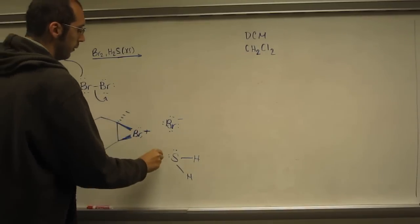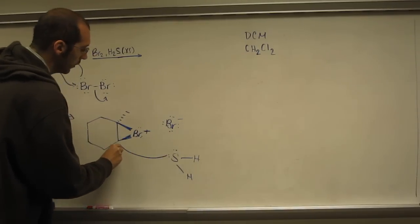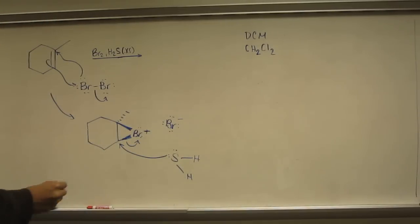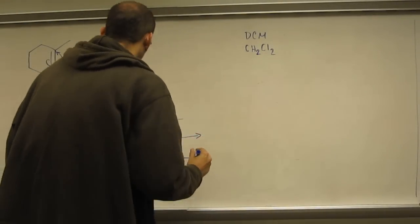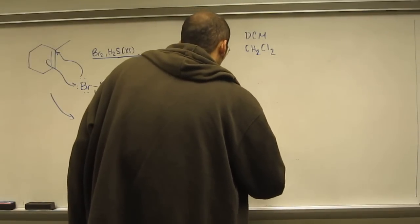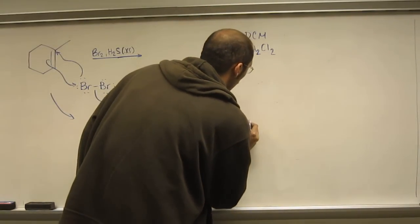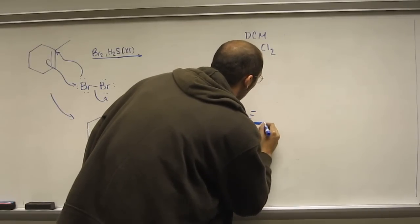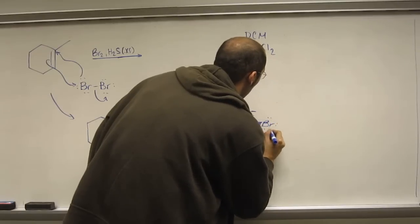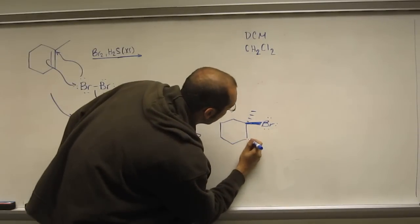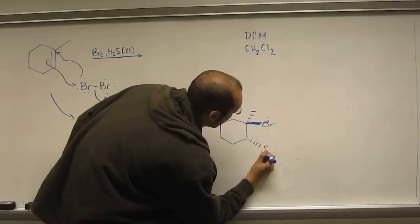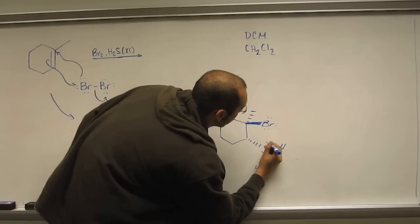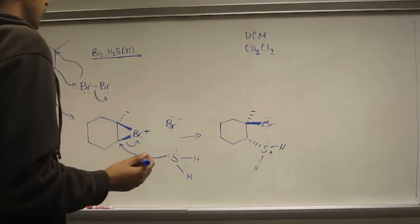And of course, you're going to make the enantiomer of that bromonium ion too. So we're going to get this reaction here. So you've got the bromine coming forward. Sulfur with that positive charge pointing backwards.